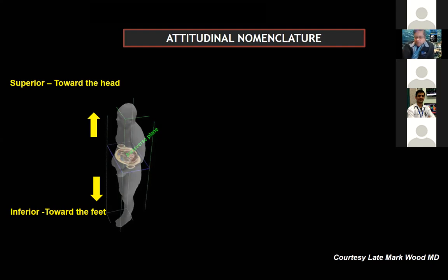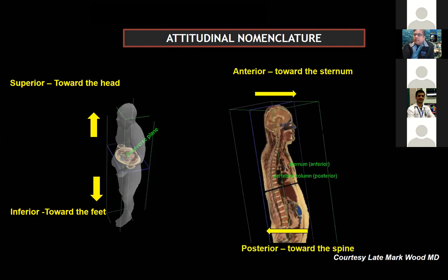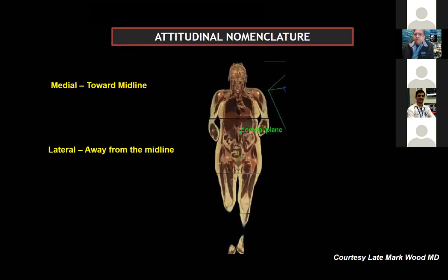Superior is toward the head, inferior is toward the feet, anterior is toward the sternum, posterior is toward the spine. We don't prefer using that term — it's better to say superior and inferior. The term anterior and posterior is to be avoided because it is meaningful in the context of the chest wall and the whole body, but when used for the heart, that leads to a lot of confusion. Medial is toward midline, lateral is away from midline. Keep that in mind.